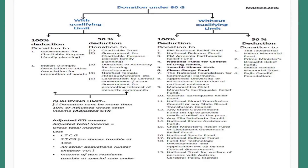If a donation is made to the government for a charitable purpose such as family planning, or to the Indian Olympic Association or other associations for the promotion of sports, then 100 percent of the amount paid as donation shall be allowed as deduction. In case a donation is made to a charitable trust, government for charitable purpose, authority for housing development, temple or corporation notified by central or state government for promoting the interest of a minority community, then only 50 percent of the donation shall be allowed as deduction. The qualifying limit is calculated as: donation cannot exceed 10 percent of the adjusted gross total income.